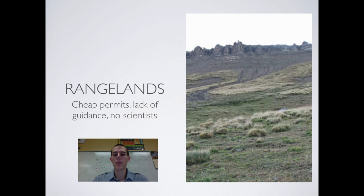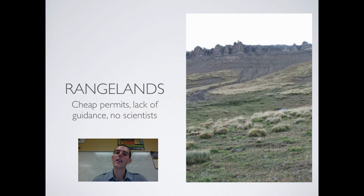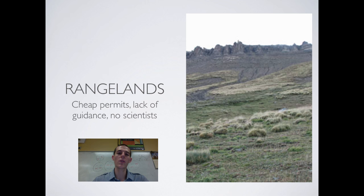With rangelands, the problems include cheap permits — meaning people can easily graze animals on land, leading to overgrazing — and a lack of guidance. The Bureau of Land Management is responsible for rangeland, but no clear goals were set for what sustainable rangeland management looks like in terms of water or ground pollution. They're likely understaffed, and no environmental scientists are involved in the management process.